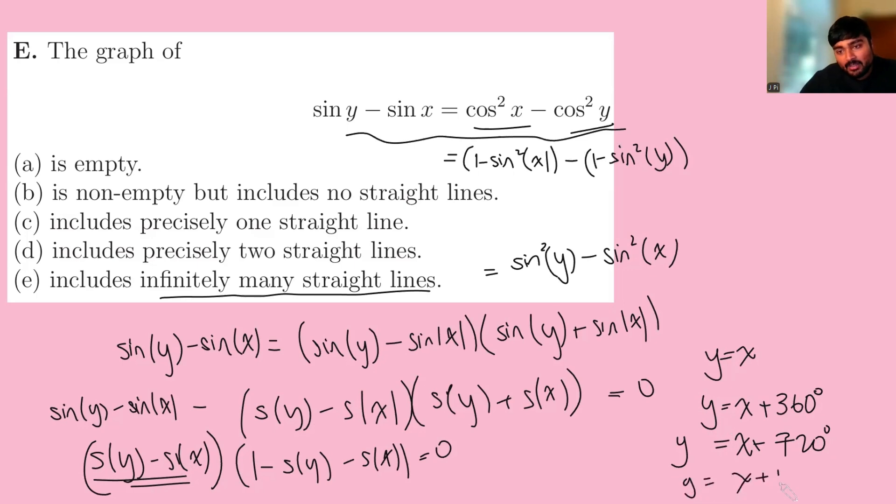You can add on n lots of 360 degrees. All of these would be straight lines on this graph here, where n is any integer you want. And that automatically gives us the answer e.